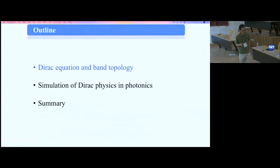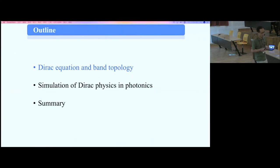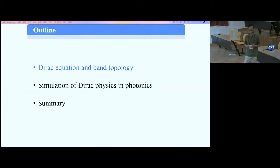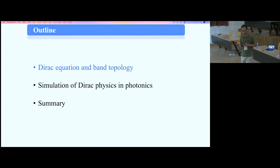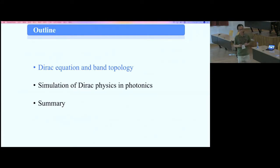The outline of my talk has three parts. In the first part I will take a journey through the Dirac equation, and then I will show you how to really simulate Dirac physics in photonics. Because the photon is a boson, it is quite different from an electron, so to do Dirac physics you have to fulfill some conditions that are not easy to meet — you need either smart material design or symmetry design.